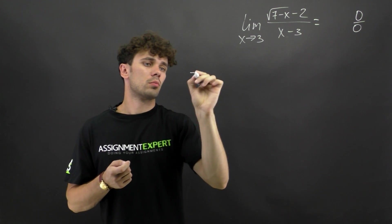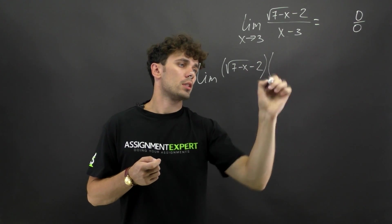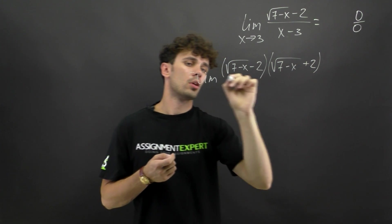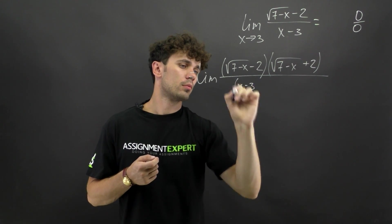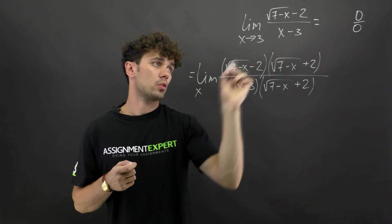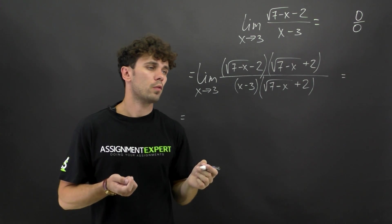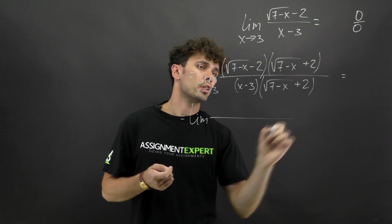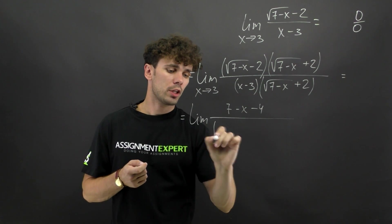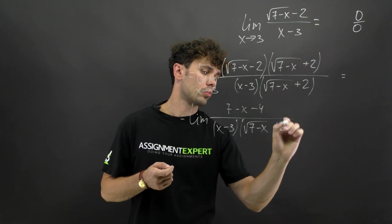So this limit gives us the limit of (square root of 7 minus x, minus 2) times its conjugate (square root of 7 minus x, plus 2), over (x minus 3) times (square root of 7 minus x, plus 2), while x tends to 3. We use the difference of squares formula: the numerator becomes (7 minus x) minus 4, and the denominator remains (x minus 3) times (square root of 7 minus x, plus 2).